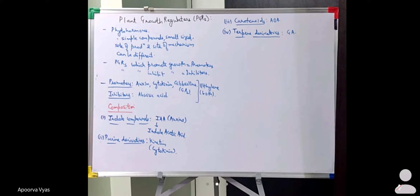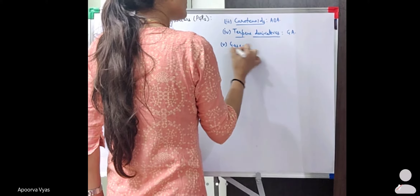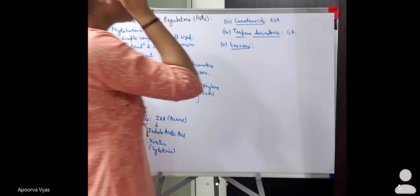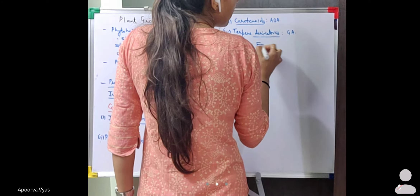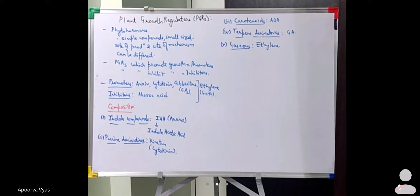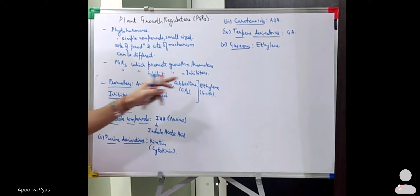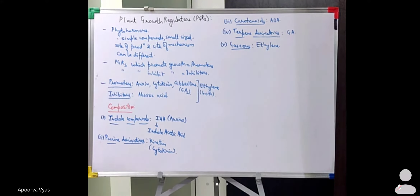The last category is gaseous hormones, with only one example — ethylene — which is the only gaseous phytohormone. In summary, growth promoters are auxins, cytokinins, and gibberellins. The inhibitor is abscisic acid, and ethylene acts as both an inhibitor and a promoter.